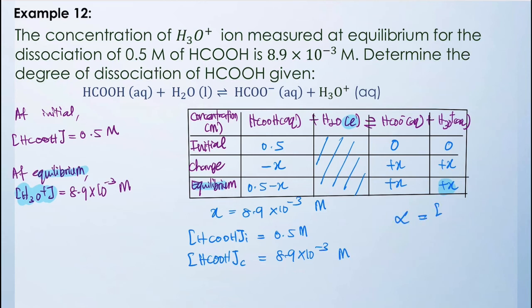From these two pieces of information, we can find the degree of dissociation. We simply fill in the values we found into the equation, and when we use a calculator, we get that the degree of dissociation equals 1.78%.